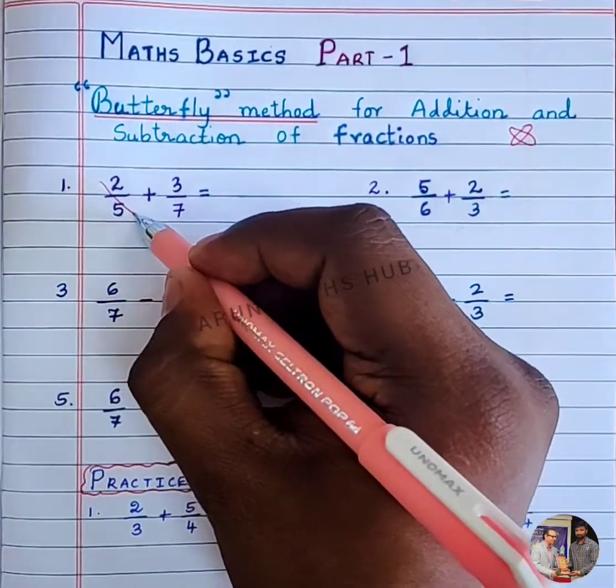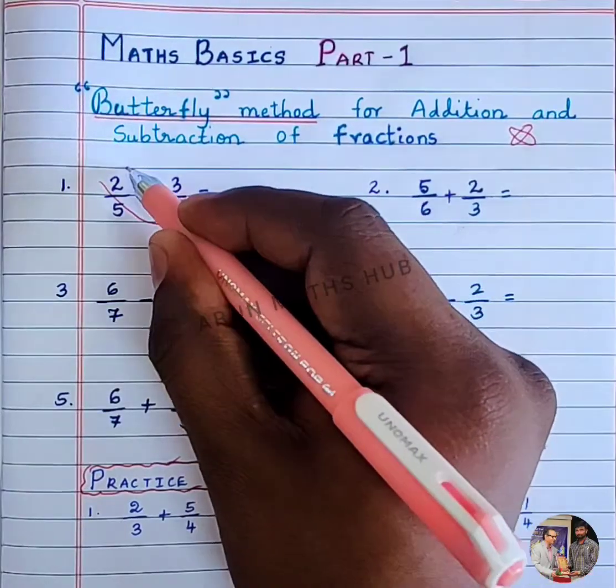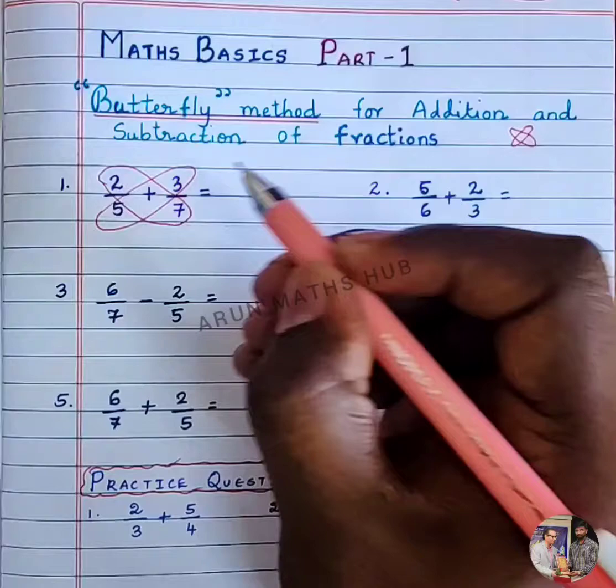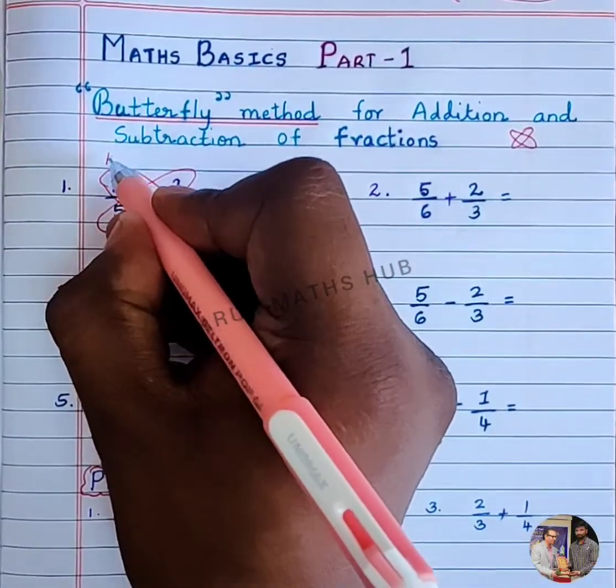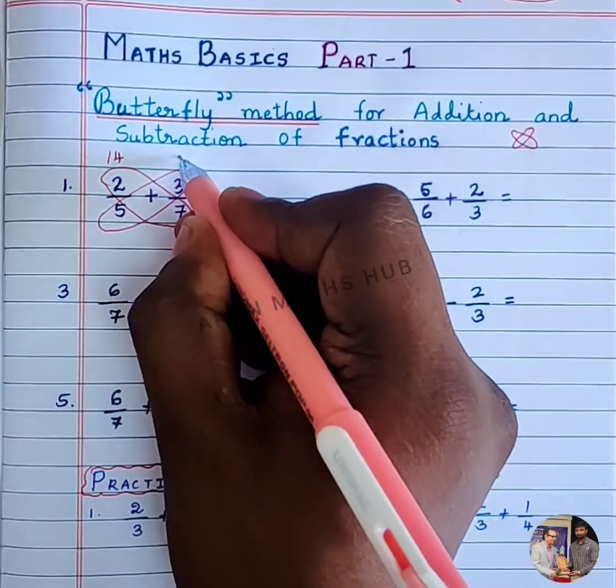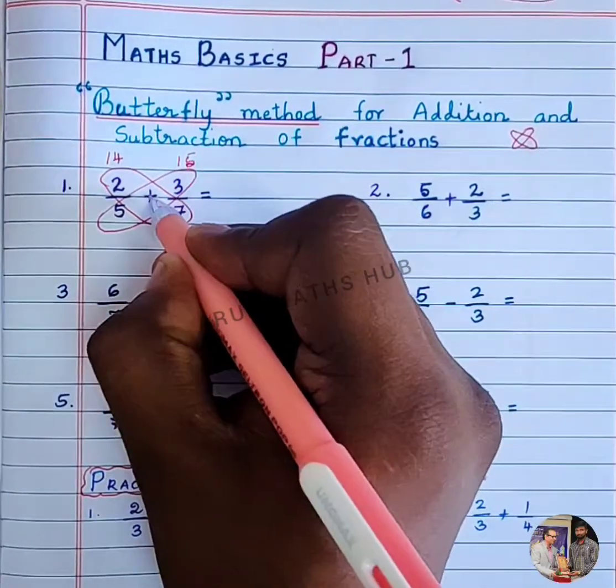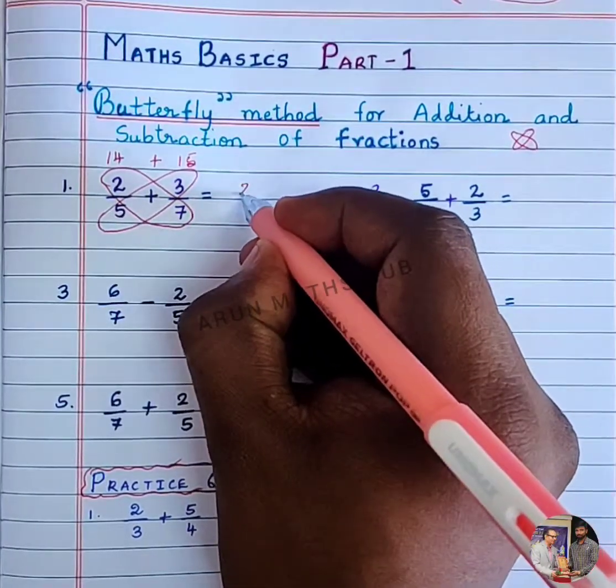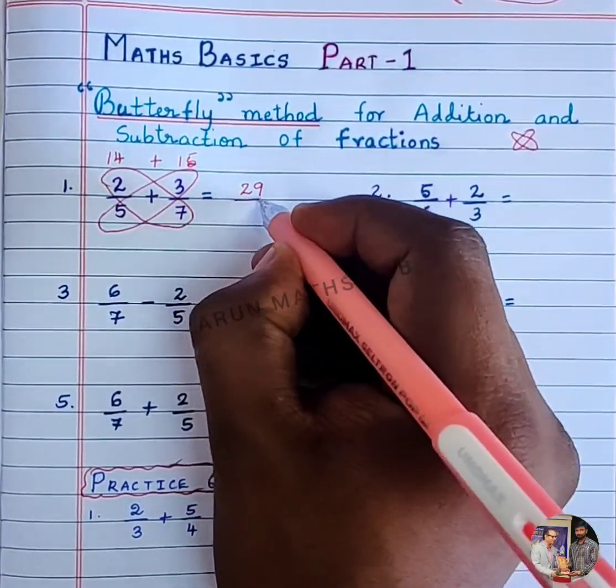For addition or subtraction of fractions, you multiply the numbers as shown here. 2 times 7 is 14. The same way, 5 times 3 is 15. Then for addition, the numerator will be 14 plus 15, which is 29.